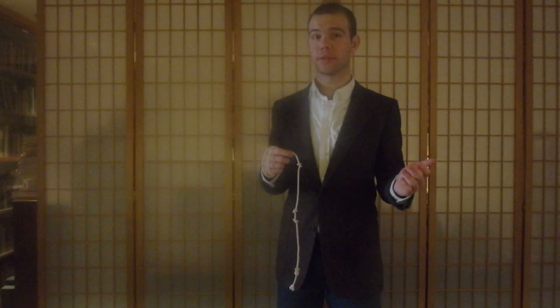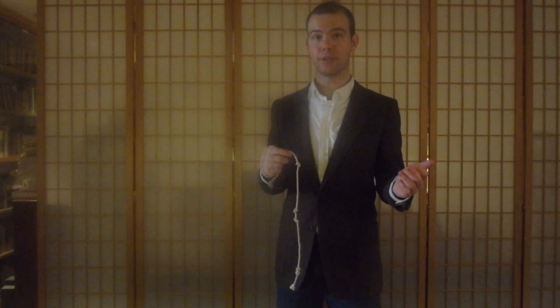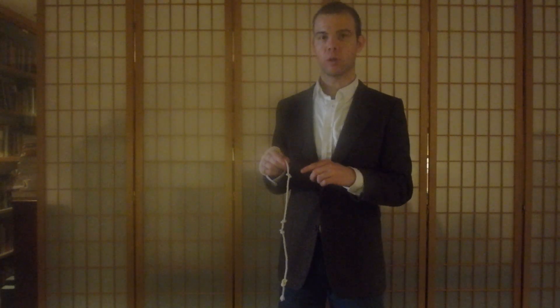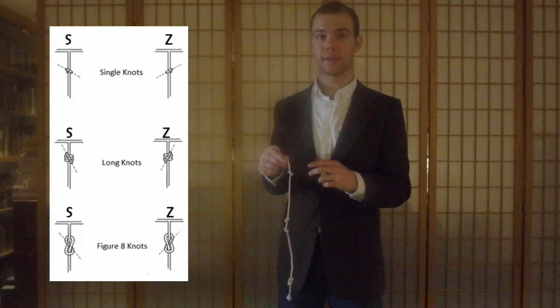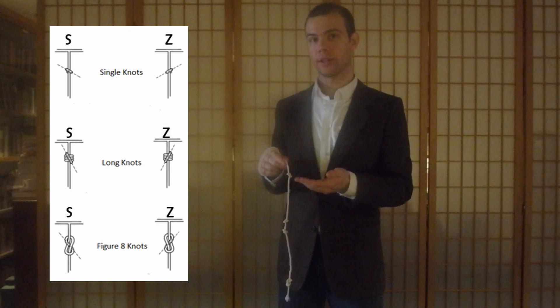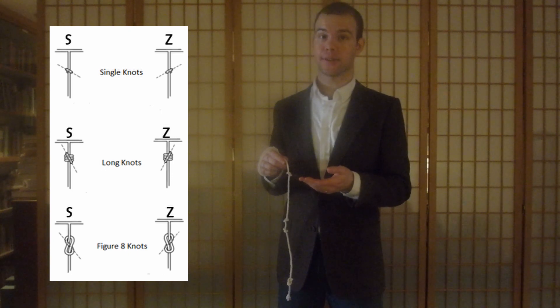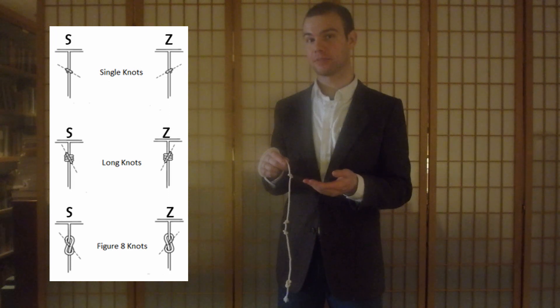In our last video, we looked at how knots could be used to signify numerical information. They can also be used to signify non-numerical information as well. So each one of these knots can be tied in multiple different ways. Single knots, for instance, can be tied in two different ways, both in an S direction and in a Z direction.